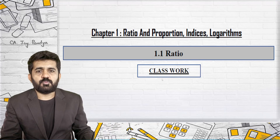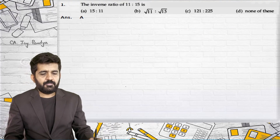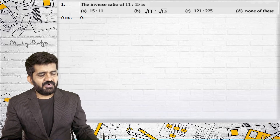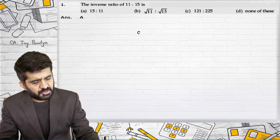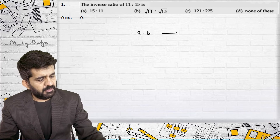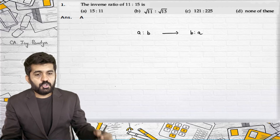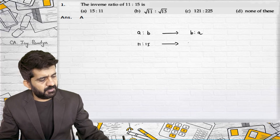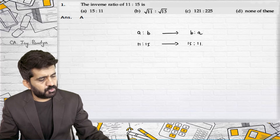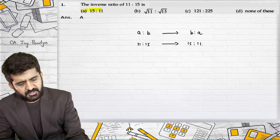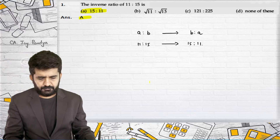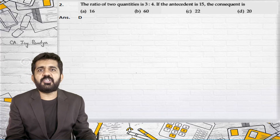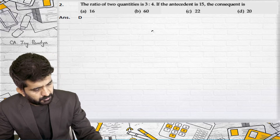That is all some of the classwork of ratios. First one: the inverse ratio of 11 is to 50. Now what is the inverse ratio of A is to B? Inverse ratio is nothing but B is to A. So the inverse ratio of 11 is to 50 will be 50 is to 11. So the correct answer is 50 is to 11.